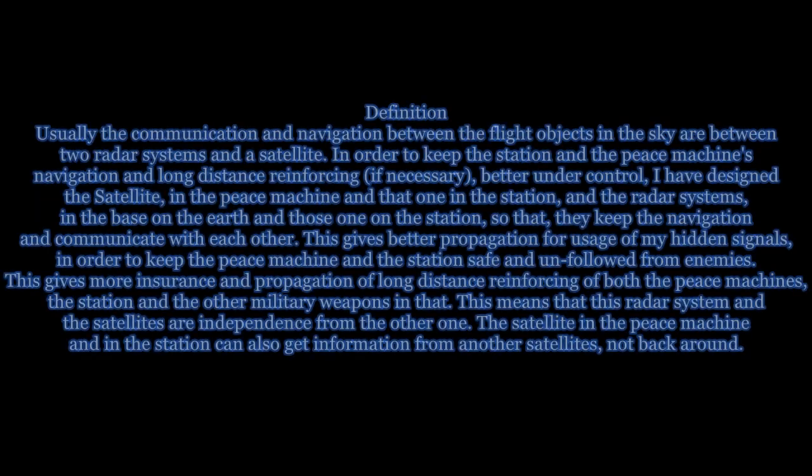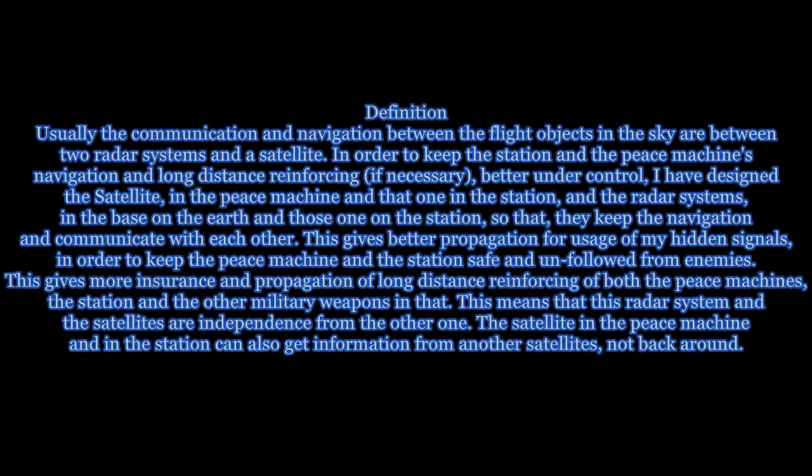Usually the communication and navigation between the flight objects in the sky are between two radar systems and a satellite. In order to keep the station and the peace machine's navigation and long distance reinforcing, if necessary, better under control,